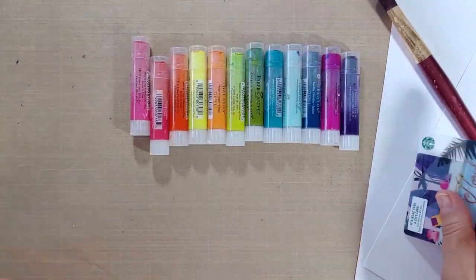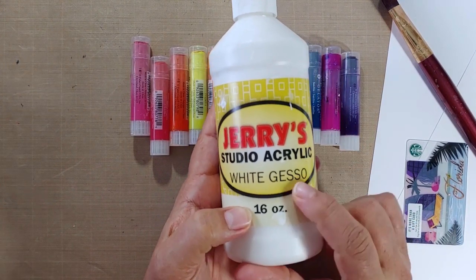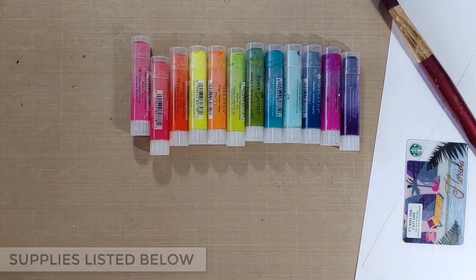So you can see here I have a Starbucks card, I've got some white gesso which is a fluid, as well as a paintbrush and some cardstock. That's it.